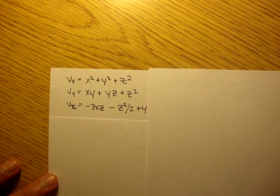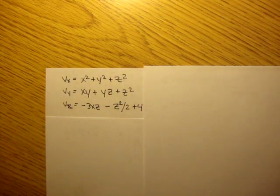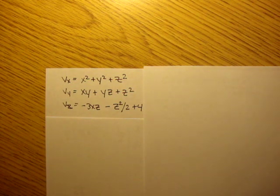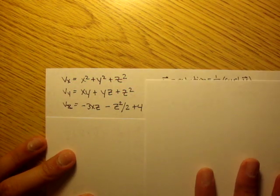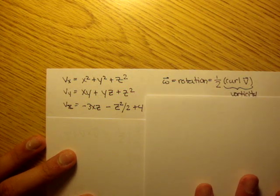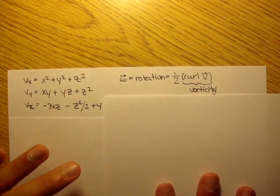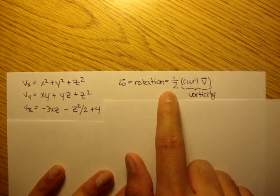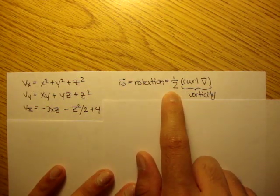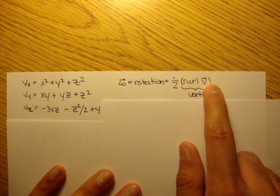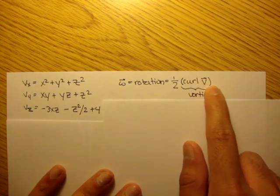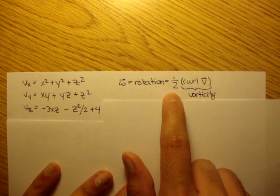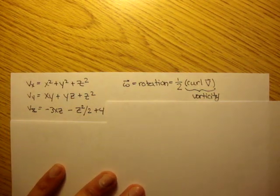Okay, so I'm going to do a very quick example using rotation vectors, or the spin vector. So the spin vector, remember we defined it in the last video to be omega is equal to the rotation, or the spin vector, and that's equal to one half of the curl of the velocity field. And remember the curl of the velocity field is equal to vorticity, so the spin vector is equal to one half of the vorticity.